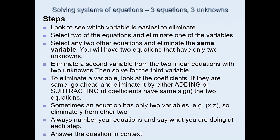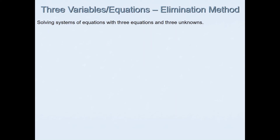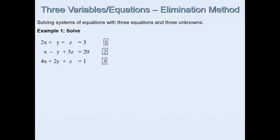We'll now work through one example using the elimination method. The question asks us to solve: equation 1: 2x + y + z = 3; equation 2: x − y + 3z = 20; equation 3: 4x + 2y + z = 1. Step 1 is to decide which variable to eliminate first.